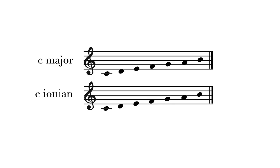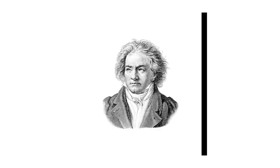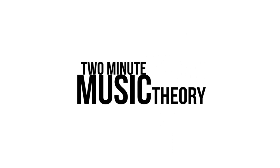As many of you have realized by now, C Major and C Ionian use the same collection of pitches and they also both use C as their home base. So they're the same thing, right? Well, no.